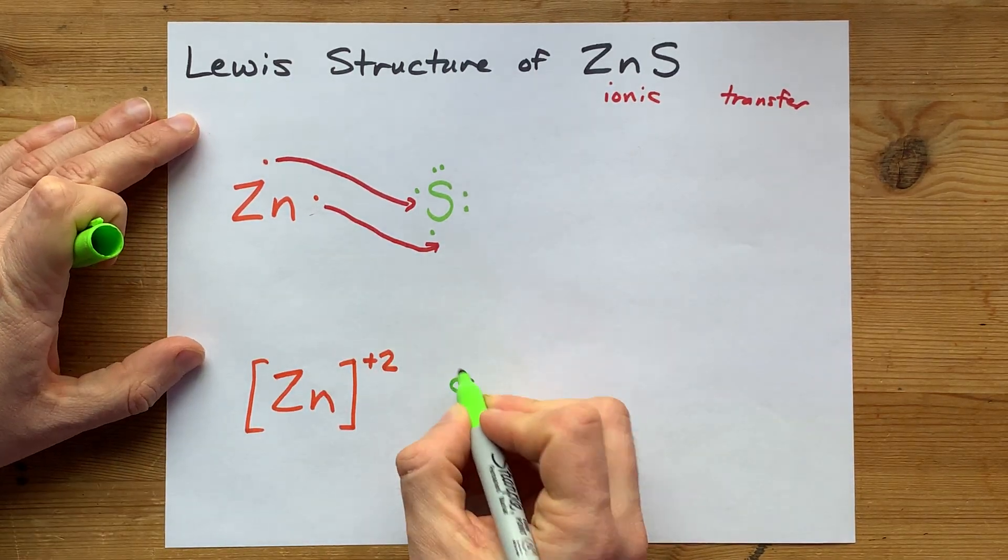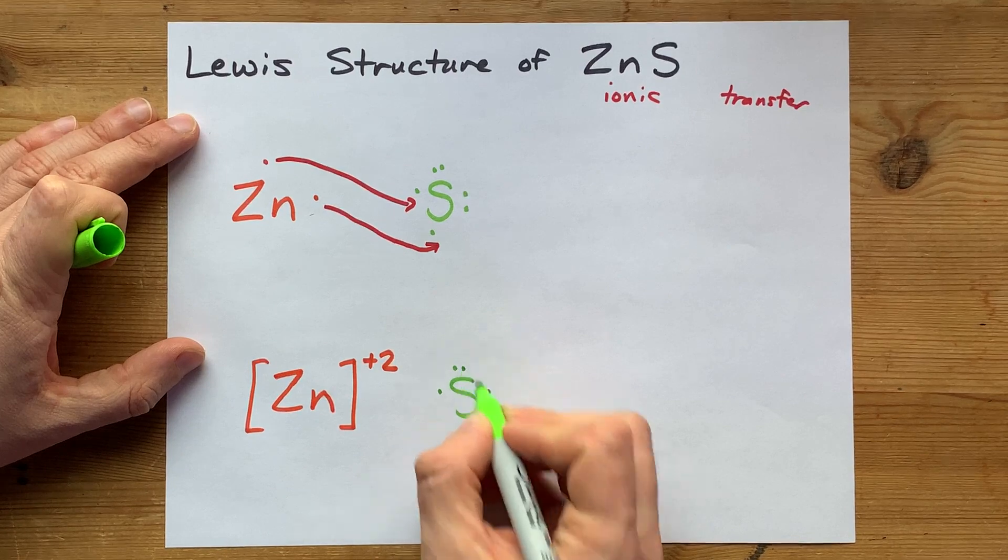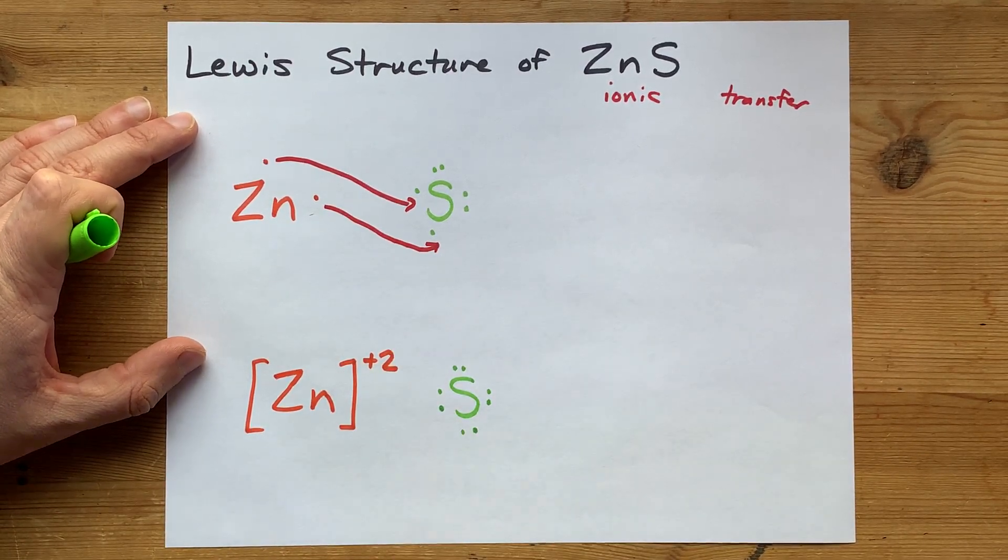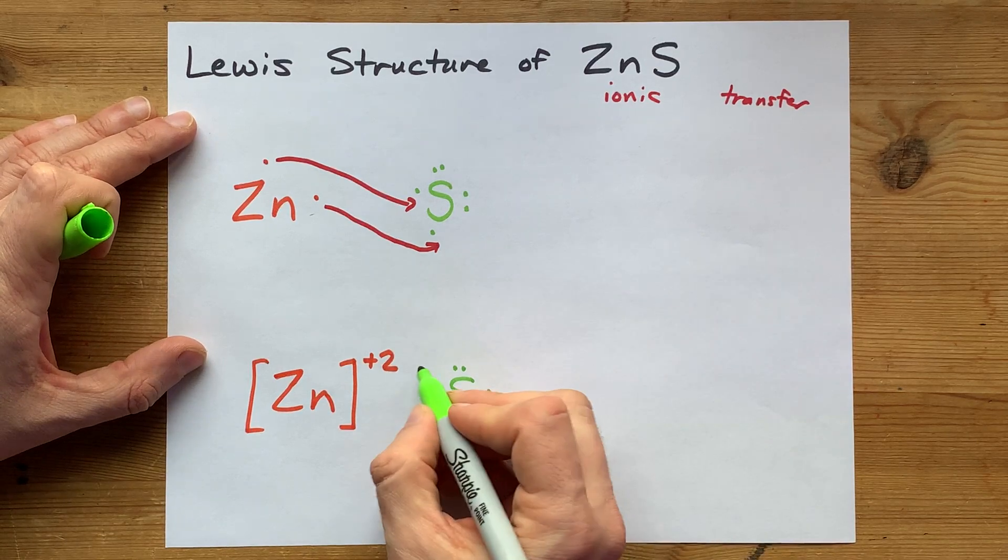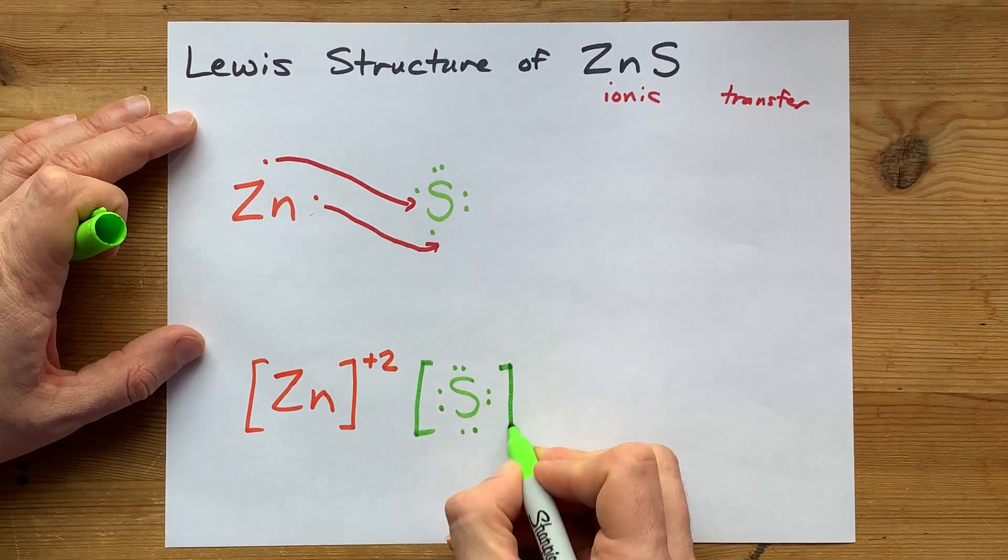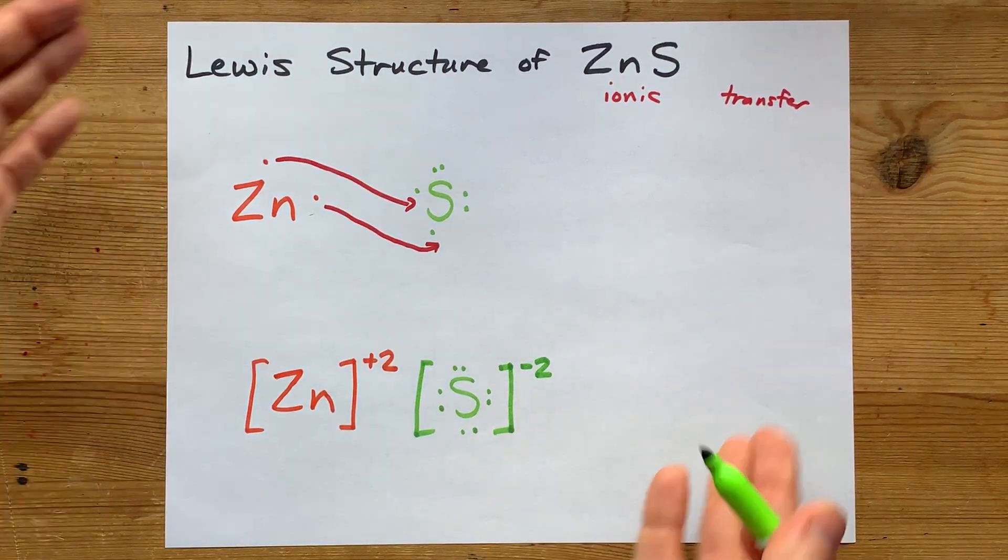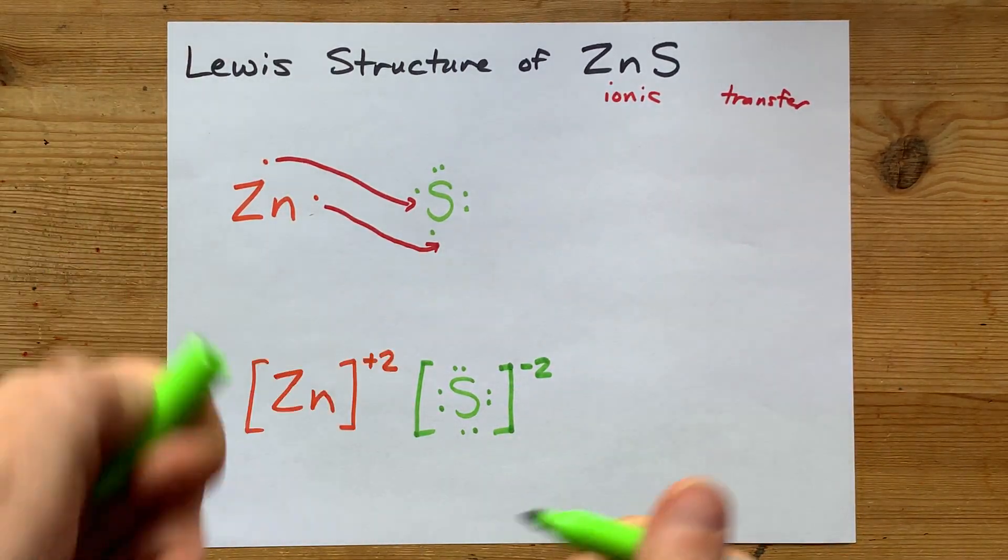Sulfur, which started with one, two, three, four, five, six electrons, then took two from zinc, now has eight in its outer shell. That also becomes an ion. So give it the square brackets, and its charge is minus two because it has two extra negatively charged electrons.